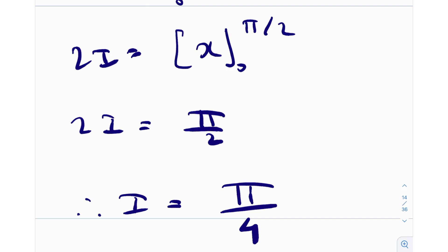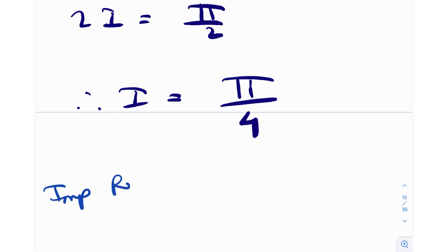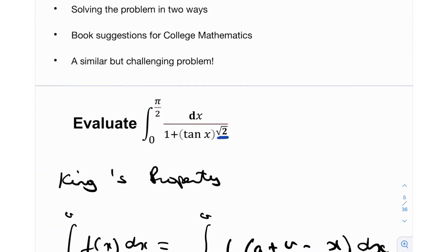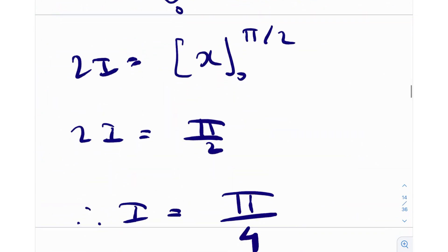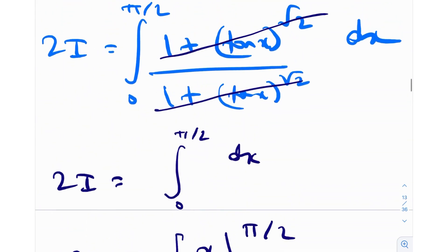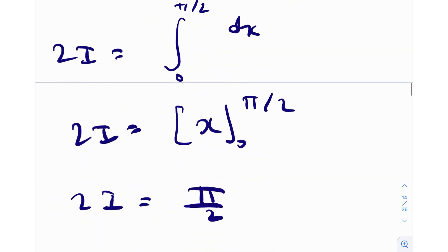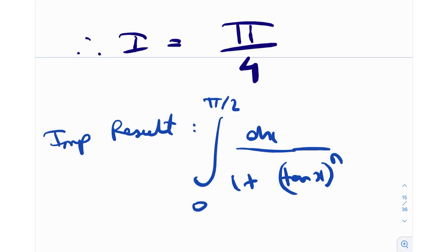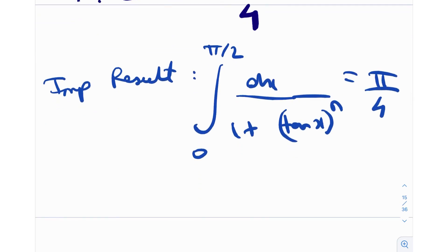But there's an important result here: the root 2 exponent played no role at all. It didn't matter if it was root 2, n, π, Euler's number, or any other value — the answer is always the same. So the important general result is: the integral from 0 to π/2 of dx / (1 + tan^n(x)) = π/4 for any n. You can prove this just by replacing tan(x) with tan(π/2 − x). Similarly, writing in terms of sine and cosine, the integral from 0 to π/2 of cos^n(x) / (cos^n(x) + sin^n(x)) dx = π/4. These two results work for any n.